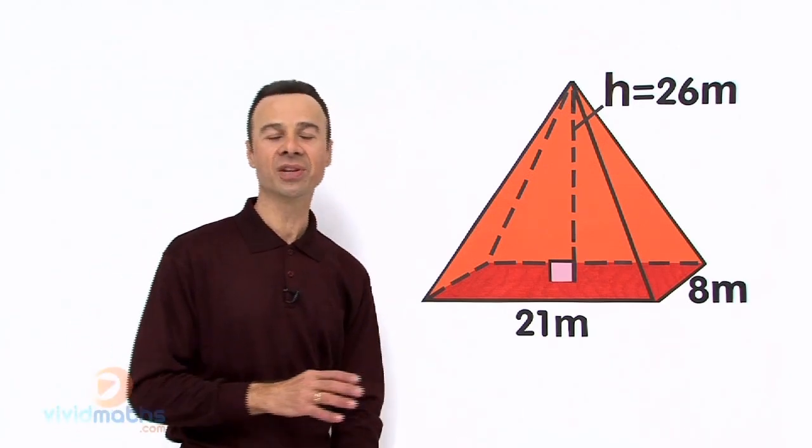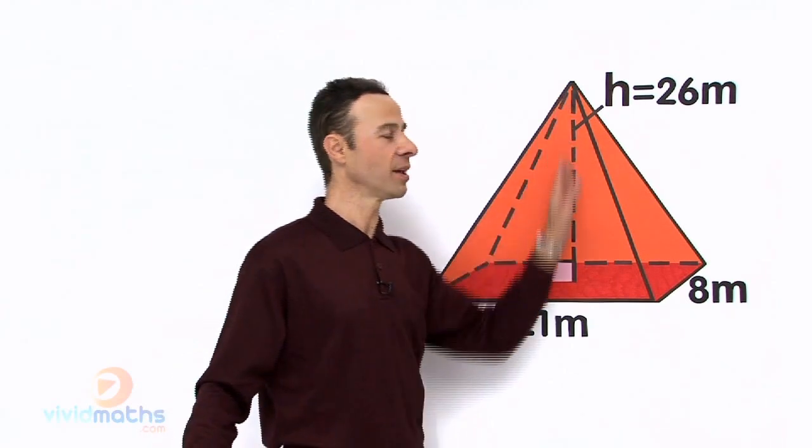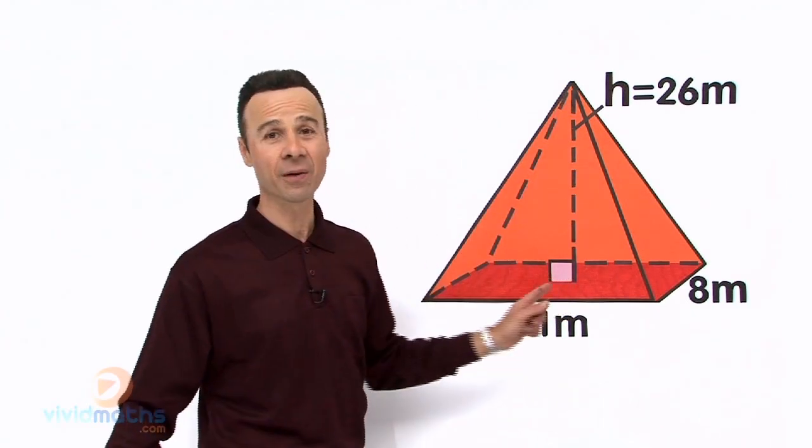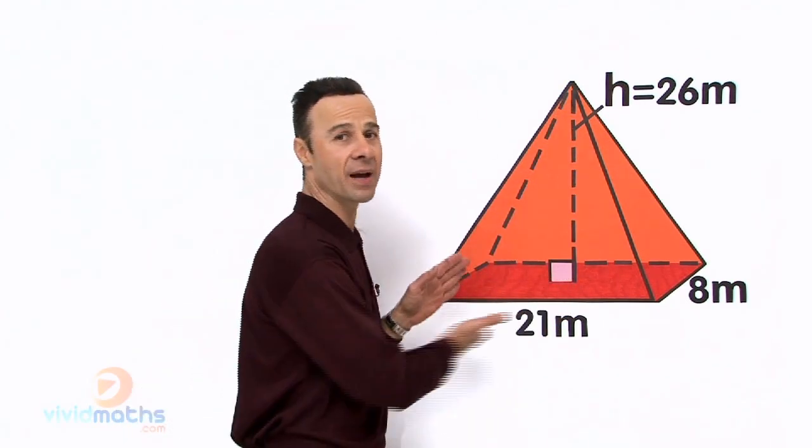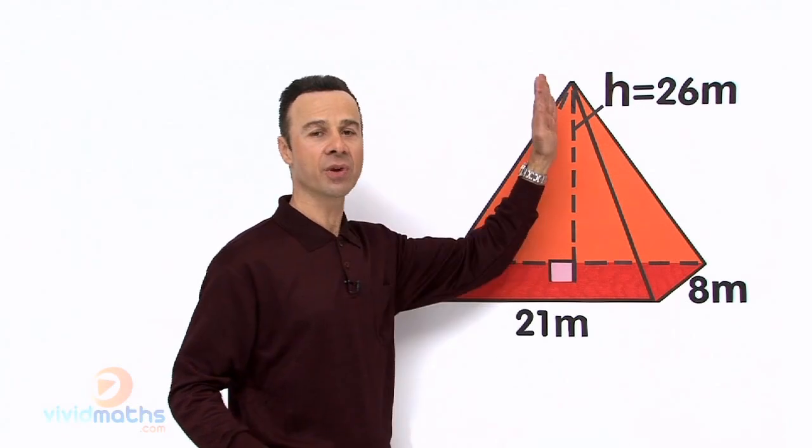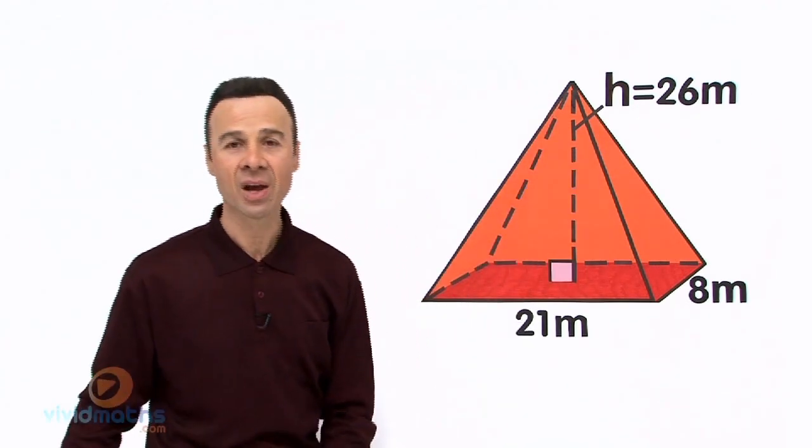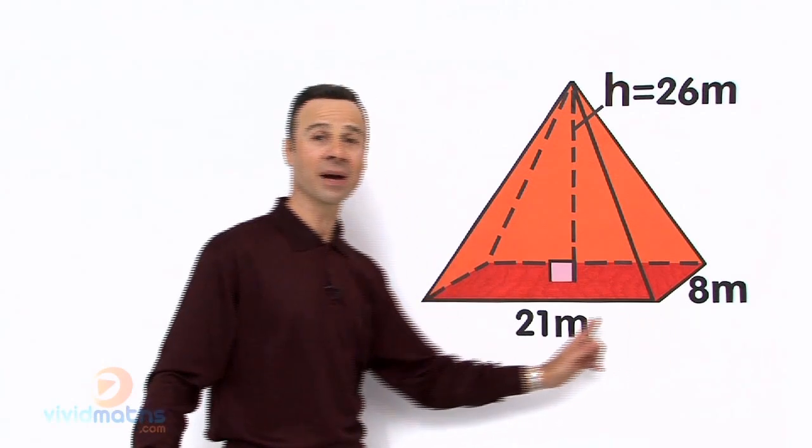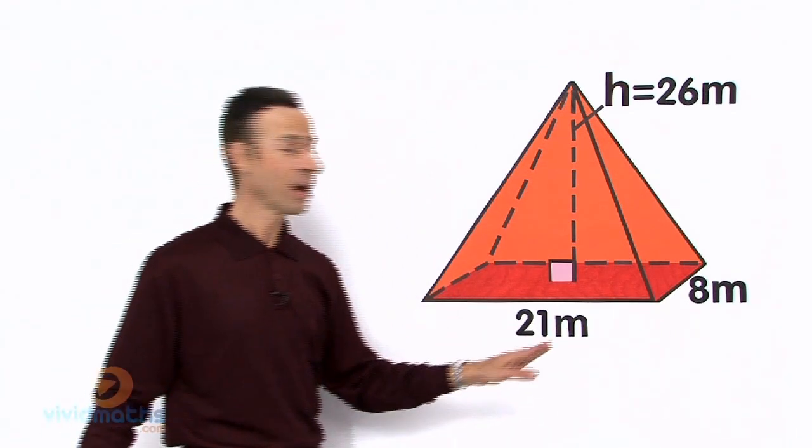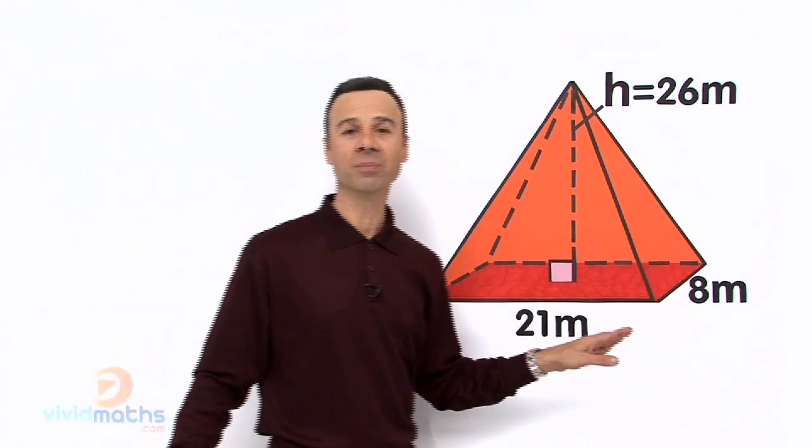Now we have a few lengths here in breadth. We have a height here and it must be perpendicular from the center of the rectangle which is the base right down here, vertically straight up at 90 degrees is a height of 26 meters. Then we have a length across here at the base which is 21 meters and a depth across there of 8 meters.